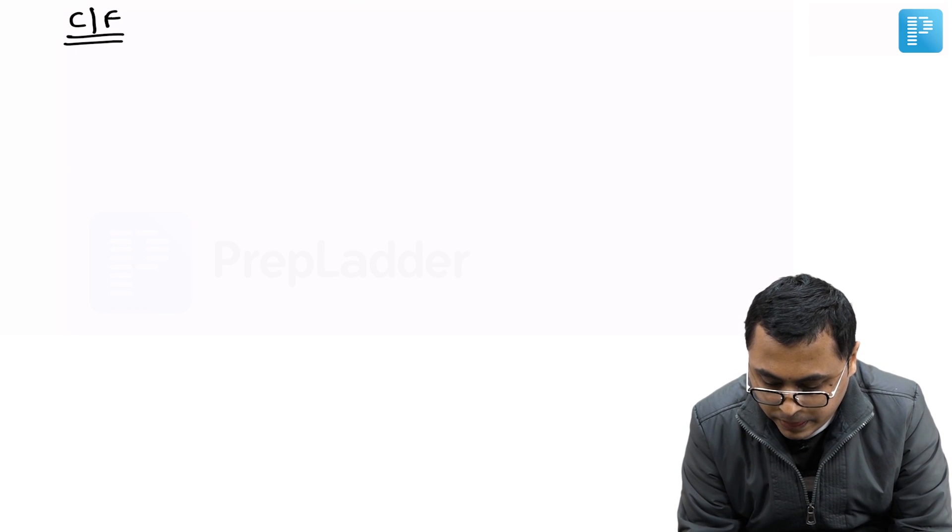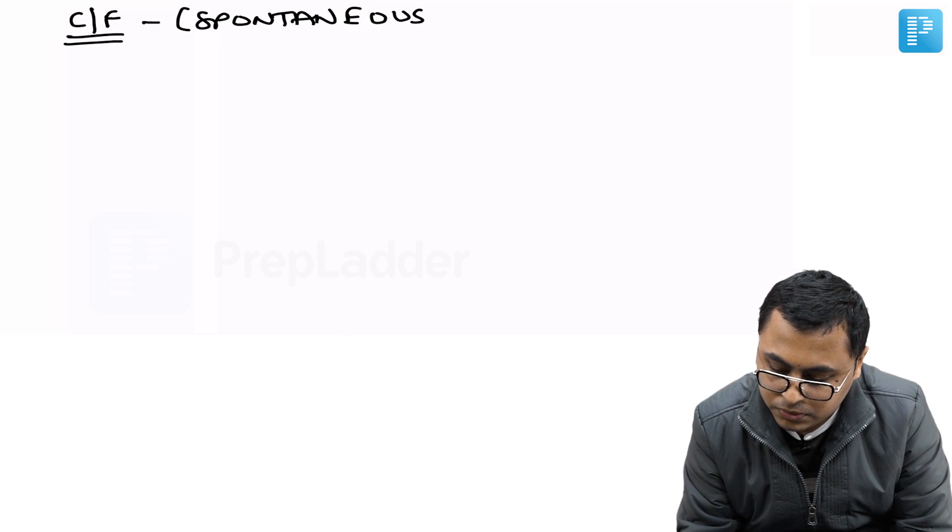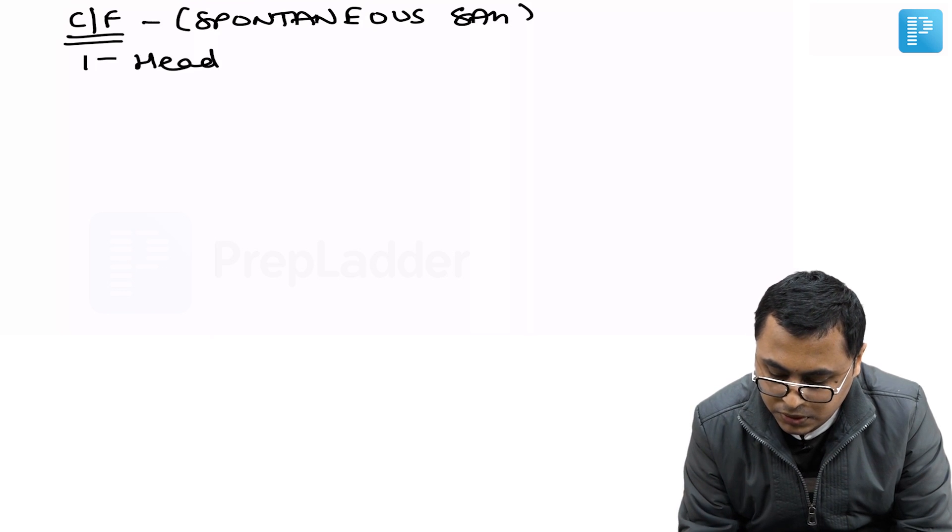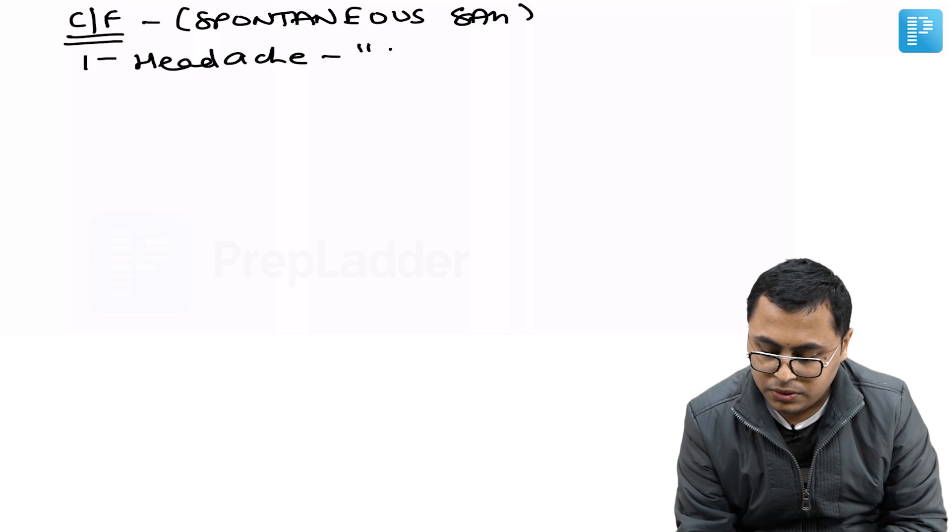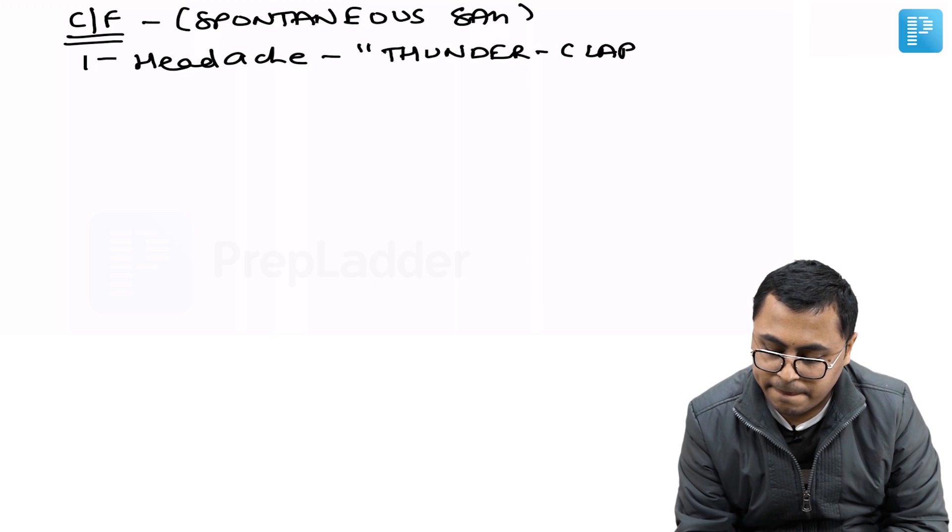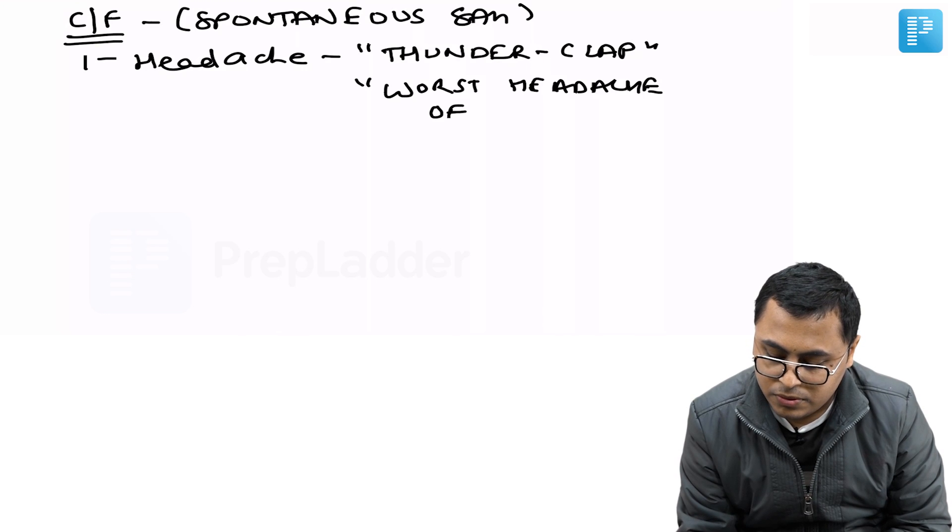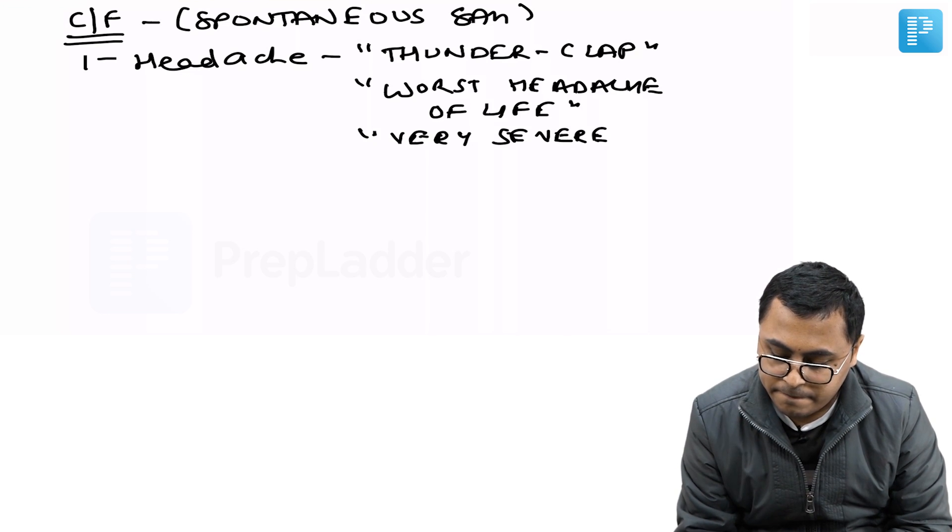Coming to the clinical features, we are discussing spontaneous subarachnoid hemorrhage. First is headache. Headache in subarachnoid hemorrhage is characteristic, with certain names like thunderclap, worst headache of life, very severe headache.